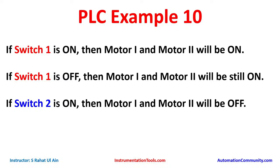If Switch 2 is on, then Motor 1 and Motor 2 will be off. For Switch 1 we will use a normally open contact, and for Switch 2 we will use a normally closed contact. Then we will use a memory bit that will be latched, and the motors will remain on even if Switch 1 is turned off. To turn off the motors we will use Switch 2.